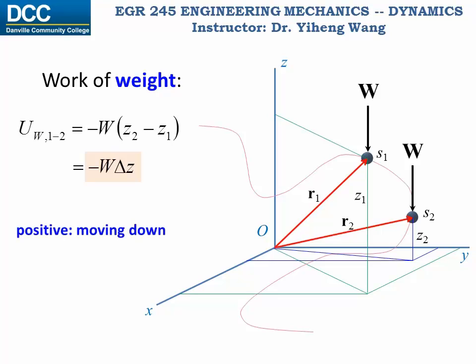If the particle is moving downward, then z2 is smaller than z1, delta z is negative, therefore the work done by weight is positive. This is easy to understand because the particle is moving along the direction of the weight force. If the particle is moving upward, then z2 is bigger than z1, delta z is positive, and the work done by weight is negative — because the particle is moving against the direction of the weight force.